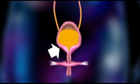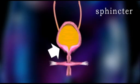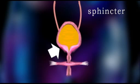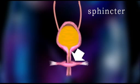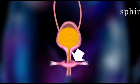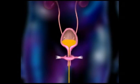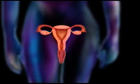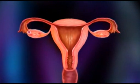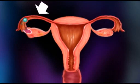At the bottom of the bladder, a ring of smooth muscle called a sphincter holds urine in the bladder. A similar sphincter of skeletal muscle nearby that is under your conscious control enables us to urinate. In the female reproductive system, smooth muscles in the fallopian tubes transport an egg to the uterus.